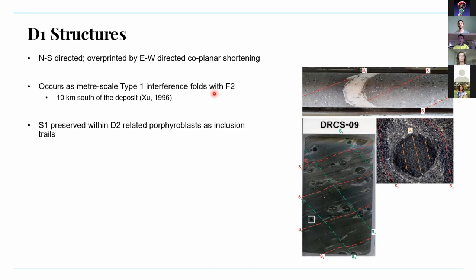S1 is commonly observed in the D2-related porphyroblasts, parallel to the S2 foliation shown by the red dashed lines. The inclusion trails within porphyroblasts represent S1, while the green dashed lines show S3, which I'll go into a little bit later.